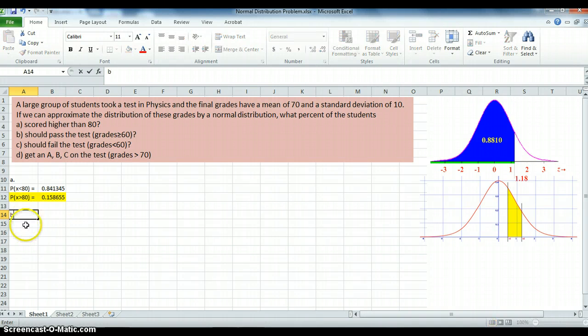What's the question in B? The question in B is, passes the test greater than 60? Well, again, the same problem. I can find the probability using the cumulative distribution function for less than 60.